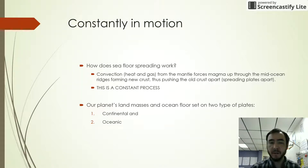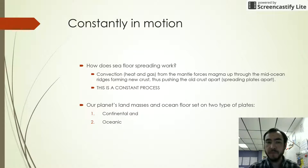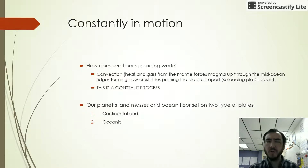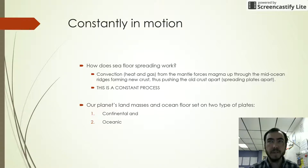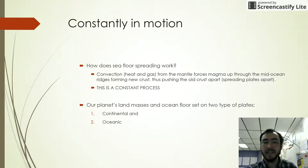So how does this work? Deep inside the Earth in the mantle, convection — heat and gas — forces magma up through the mid-ocean ridges, forming new crust. When this new crust cools and hardens, it forcefully pushes the old crust apart. Therefore, the plates spread apart. This is known as continental drift, and this is a constant process.